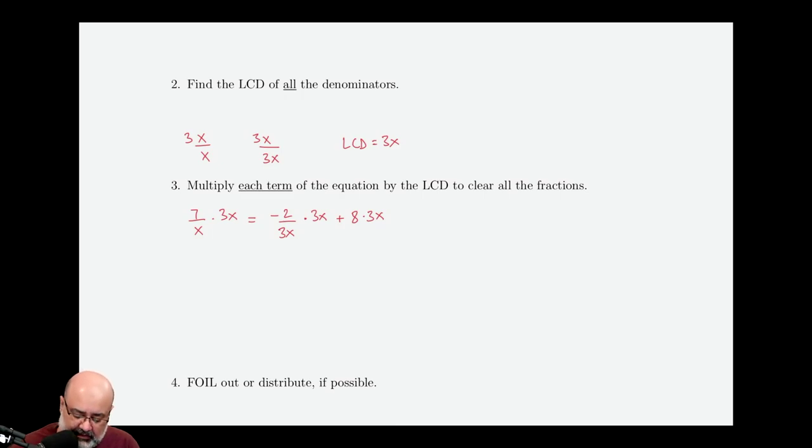The reason we're doing this is so that this x cancels with this x. This 3x cancels with 3x. And here for 8, there's no denominator, so nothing cancels there. Let's write down what we have left. So we have 7 times 3 equals negative 2. That's it. Negative 2 plus 8 times 3x.